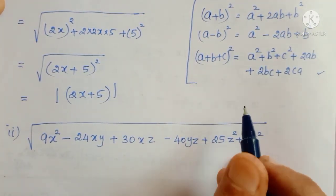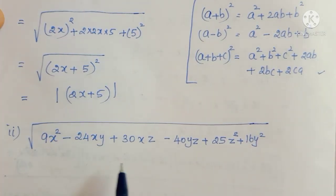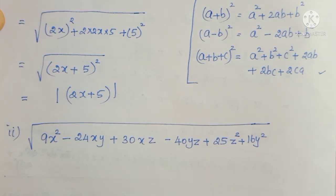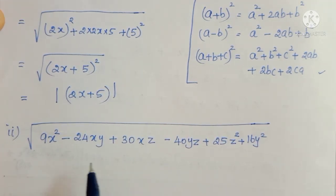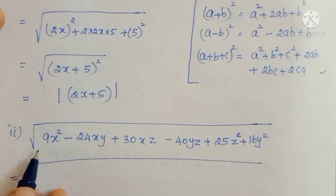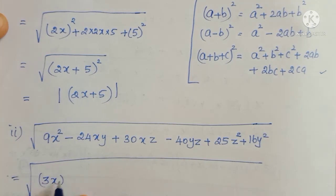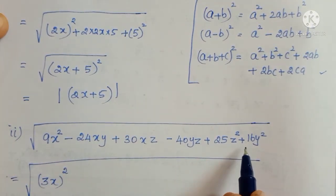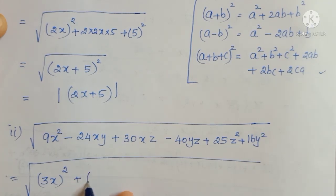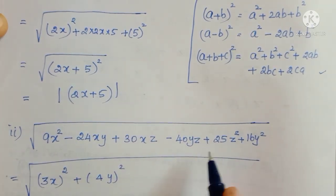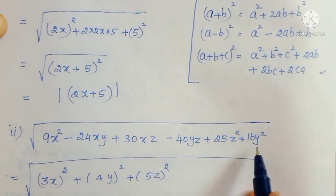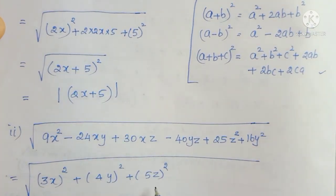So how to rearrange? First, identify the square numbers — it is easy to write the remaining terms from there. In this long expression, we identify a squared, b squared, c squared. The first term is 9x squared, which we can write as 3x whole squared. Then 16y squared can be taken as 4y whole squared. Then 25z squared can be written as 5z whole squared. So a equals 3x, b equals 4y, and c equals 5z.